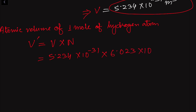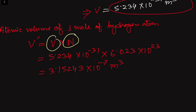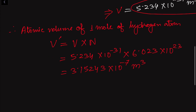Calculating this product gives us 3.15243 into 10 to the power minus 7 meter cube. Since N is dimensionless and V has units of meter cube, the final answer is 3.15 into 10 to the power minus 7 meter cube. This is the solution of problem number 2.16 from chapter number 2.